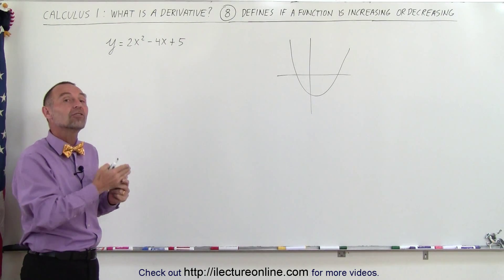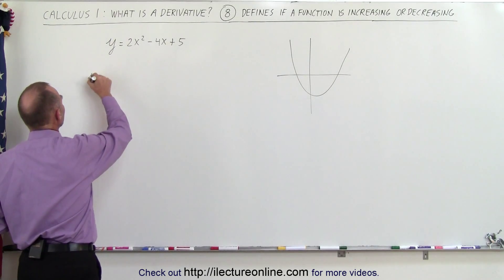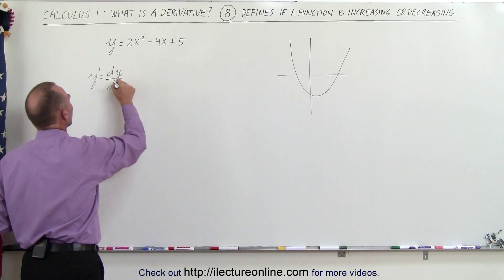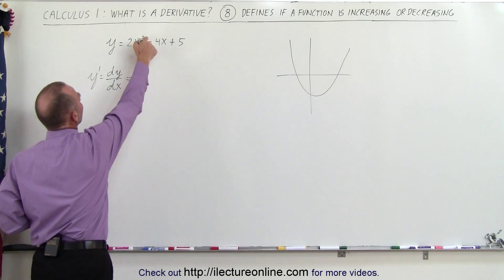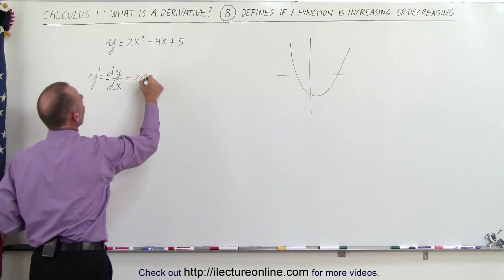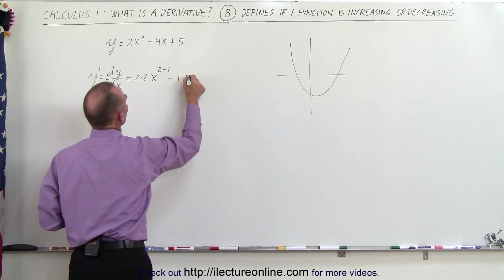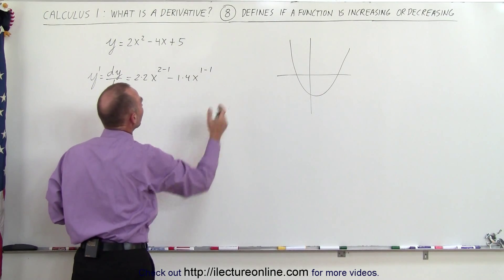So y prime, which is really the change in y with respect to x, the derivative of y with respect to x, is equal to: moving the exponent to the front, we have 2 times 2 times x to the 2 minus 1, minus 1 times 4x to the 1 minus 1. And of course the derivative of a constant is simply 0. So that means that the derivative y' = 4x - 4.